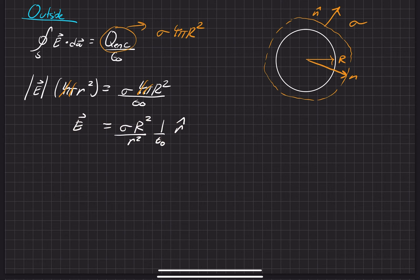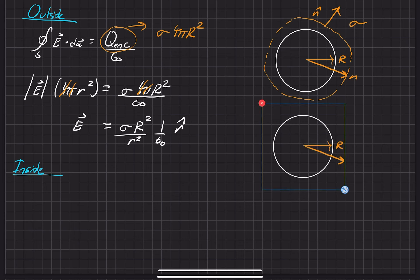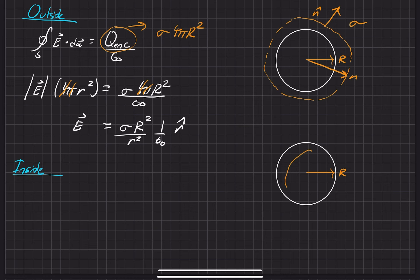For the inside, we're going to go ahead and explicitly write it out. So inside, if we draw our Gaussian surface — just drawing it in orange — that is our Gaussian surface in the middle, and it still has a radius of little r. We can go ahead and use Gauss's law in integral form again.